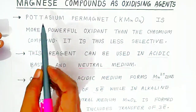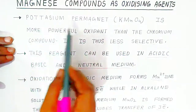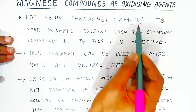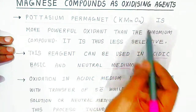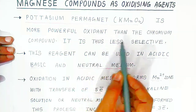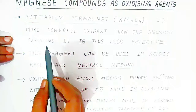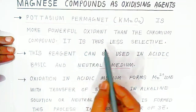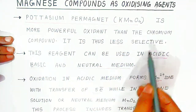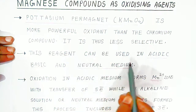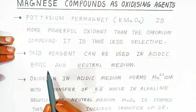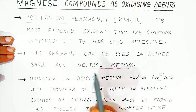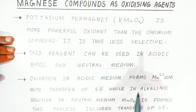The first manganese compound we are going to take is called potassium permanganate. The formula is KMnO4. It is a more powerful oxidant than the chromium compound we saw in the last video, and it is thus less selective. This reagent can be used in acidic, basic, as well as neutral medium.